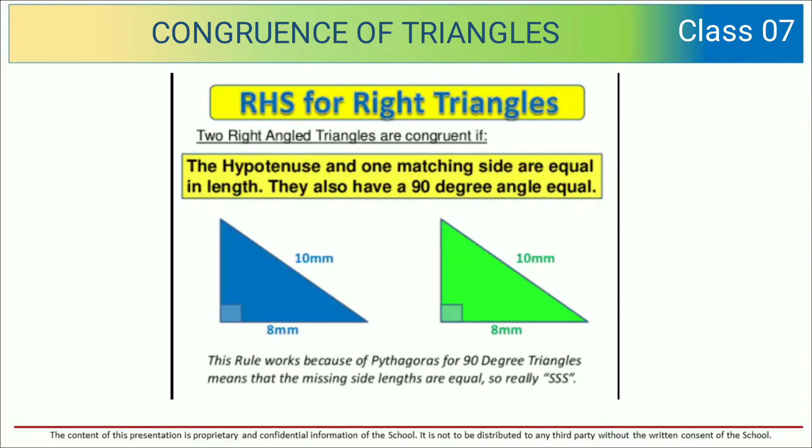So over here green and blue, two triangles you can see. 8mm, 10mm, the measurements are given. So this rule works because of Pythagoras for 90 degree triangles, means that the missing side lengths are equal.